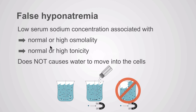False hyponatremia is when you have a low serum sodium concentration, but the extracellular osmolality or tonicity is normal or high. If it's normal, you'll get no movement. If the extracellular tonicity is even higher than the intracellular tonicity, you'll get movement of water out of the cells. In false hyponatremia, water does not flow into the cells — that's why we call it false hyponatremia.